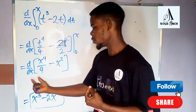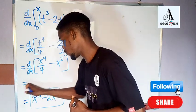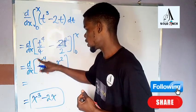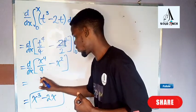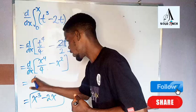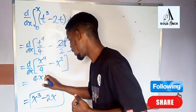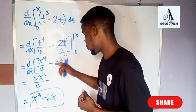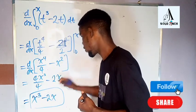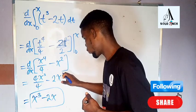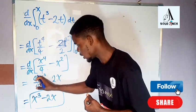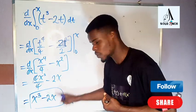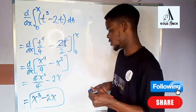We just have to differentiate this to see what we have. Each of these are power functions, so we apply the power rule. We bring the 4 down and subtract 1 from the power, giving 4x to the power of 3 divided by 4, minus — bringing down the 2 — 2x to the power of 1. You'll notice that the 4 cancels the 4, and what we are left with is x to the power of 3 minus 2x. And that's exactly what we wanted.